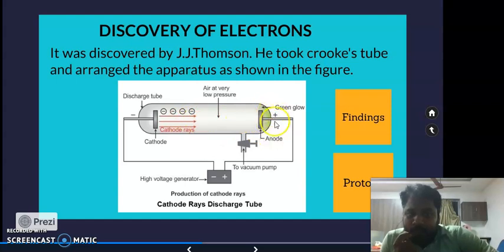This shows that there is negative charge in the gas, and these are called cathode rays. These negatively charged particles are called electrons. J.J. Thomson discovered the electron.